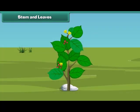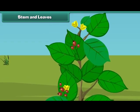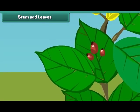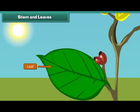Friends, do you know which part of the plant helps them to prepare food? That's right. It is the leaves. Leaves are green in color and are born out of a stem.